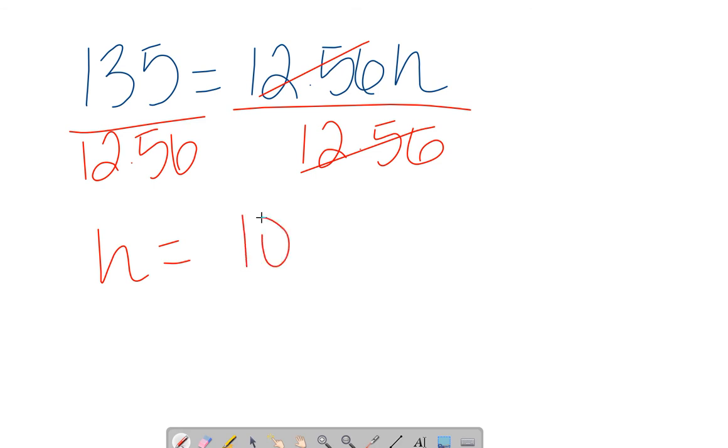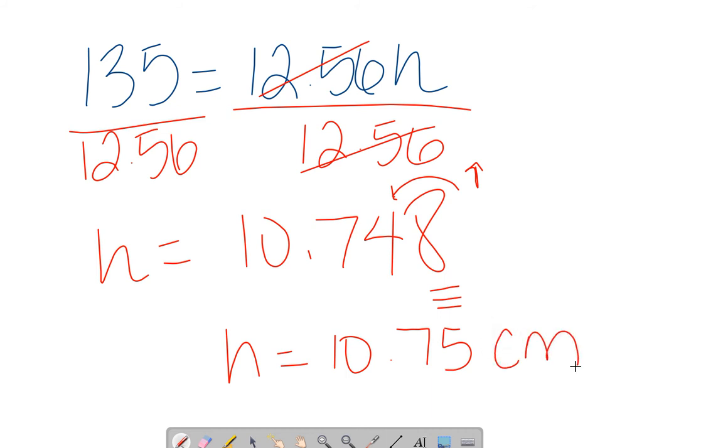We wind up with h equals 135 divided by 12.56, which is 10.748. Why three decimal places? Because we need to round to the hundredth, which means two places. To know the hundredth place, I need the thousandth place. The 8 rounds the 4 up. So h equals 10.75 centimeters. Remember there were units in the problem, so include units in your answer.